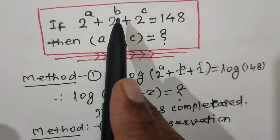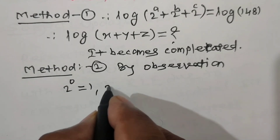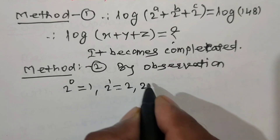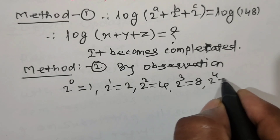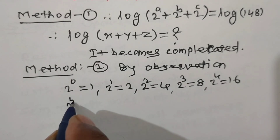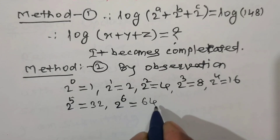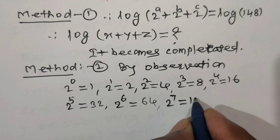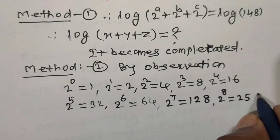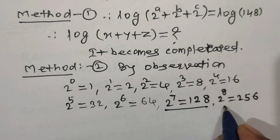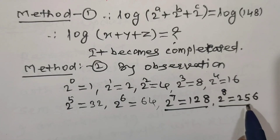We can put values for the arbitrary constants: 2^0 = 1, 2^1 = 2, 2^2 = 4, 2^3 = 8, 2^4 = 16, 2^5 = 32, 2^6 = 64, 2^7 = 128, and 2^8 = 256. Looking at these two values: 128 is less than 148 but 256 is greater than 148.